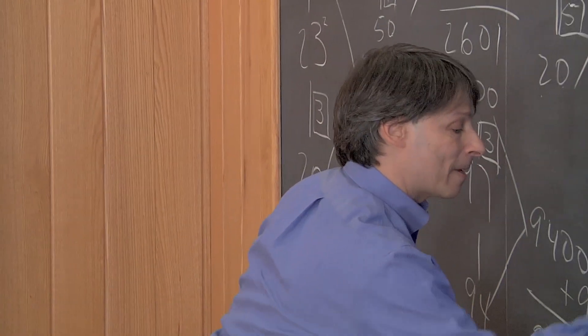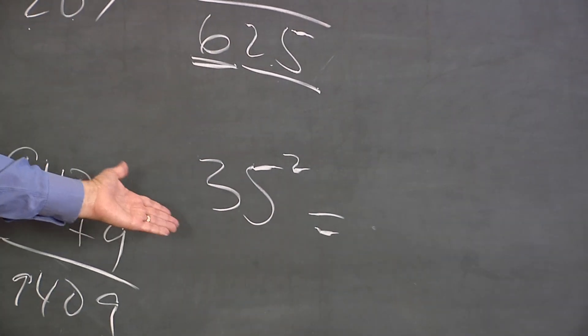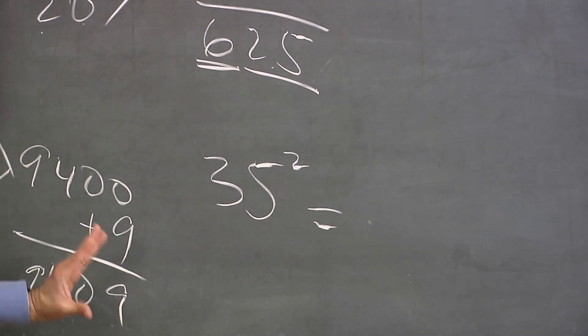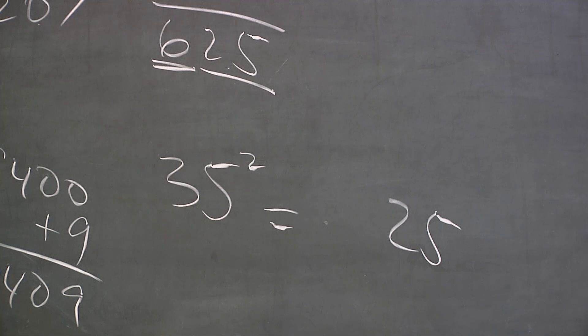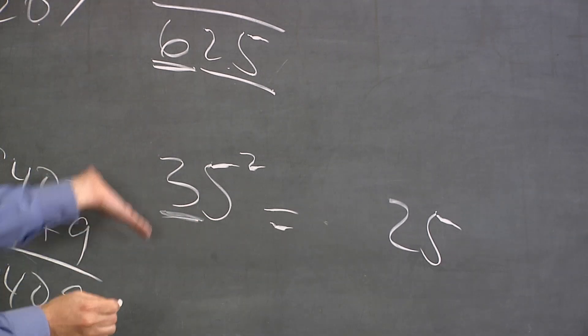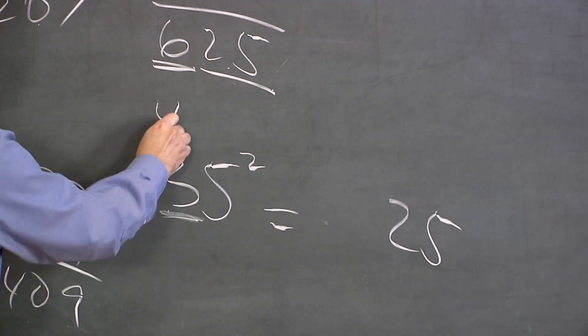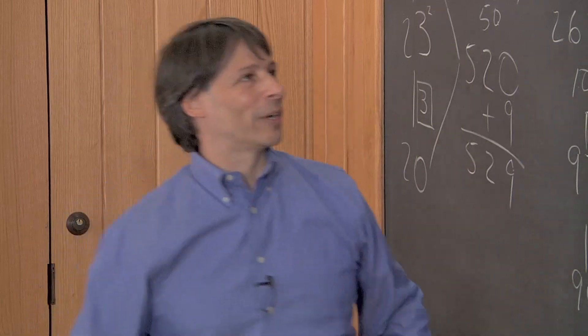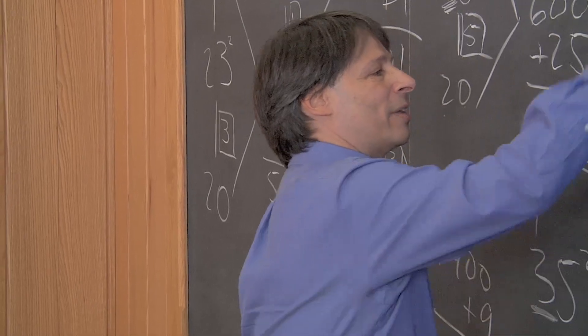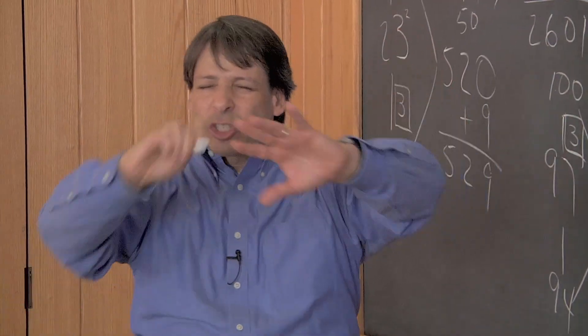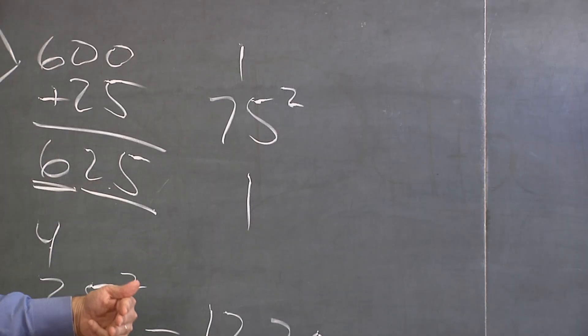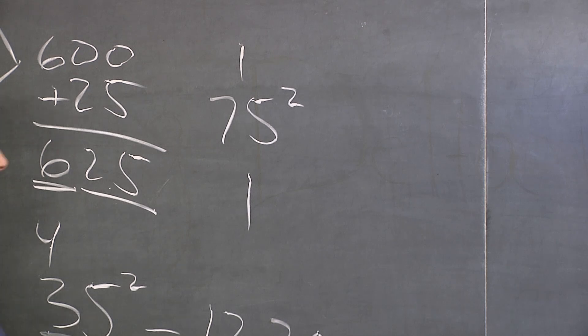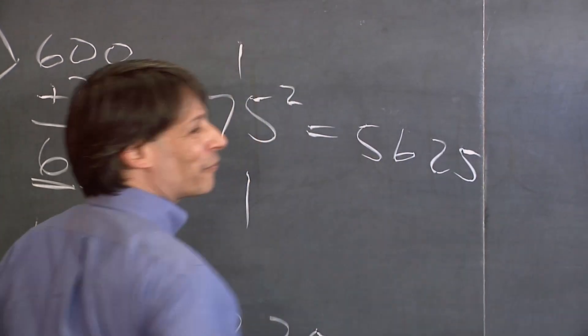Let's try another example. Let's say the problem was 35 squared. So again, 35 squared is going to end with 25. How does it begin? It begins by taking the first digit, 3, times the next higher digit, 4. 3 times 4 is 12. And there's your answer, 1225. Okay, you do this one. How about squaring 75? Think about it. Give me the answer. How do we do this? 7 times 8 is 56. So the answer is 5625.